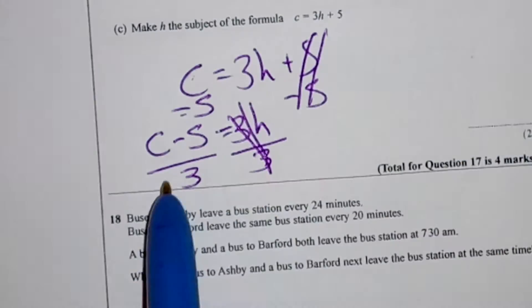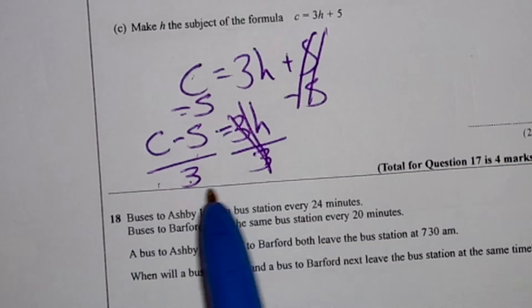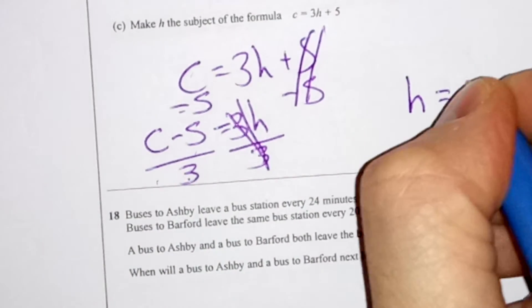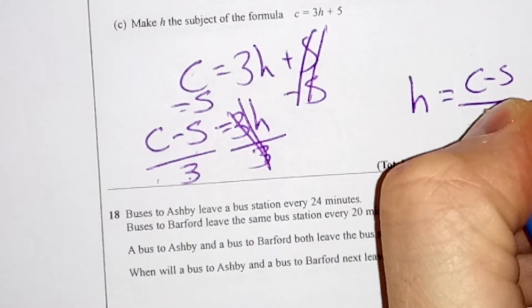These cancel out. So I've got c minus 5 divided by 3. I'll just write that. h equals c minus 5, all of it, divided by 3.